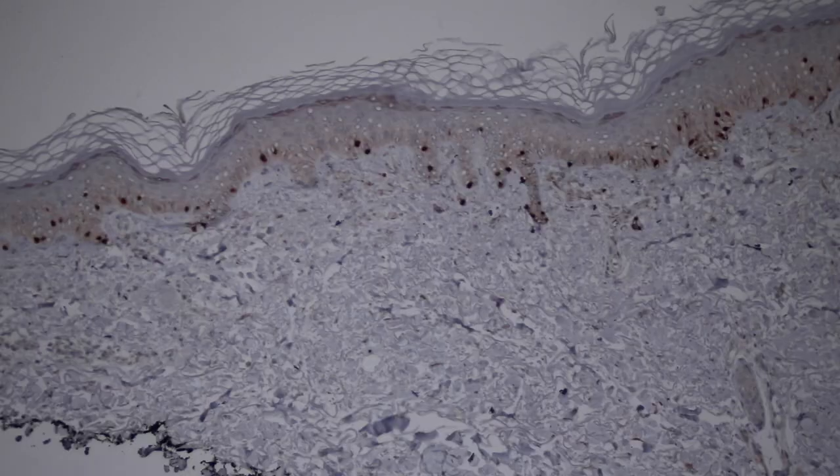All right, and one other immunostain to show is a stain called Sox-10, and it's a nuclear marker, it's a protein that's in the nucleus of melanocytes.